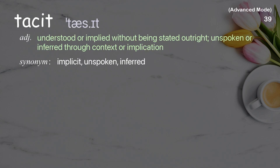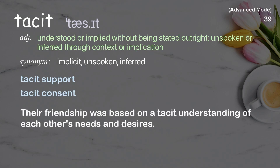Tacit: Understood or implied without being stated outright, unspoken, or inferred through context or implication. Examples: Tacit support. Tacit consent.